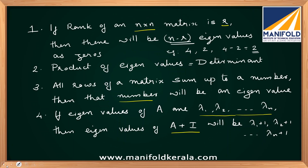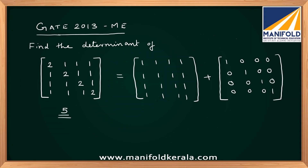Now we go back to the problem. Once you have the knowledge of these linear algebra ideas, you can check the rank of this particular matrix. You can see all rows are the same, so the rank is 1. The order of the matrix is 4, so there will be three eigenvalues which are zeros: lambda 1, lambda 2, and lambda 3 are all zero. Also, all rows add up to the same value: 1 plus 1 plus 1 plus 1 equals 4. So the fourth eigenvalue is equal to 4.